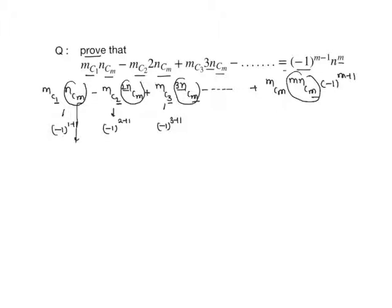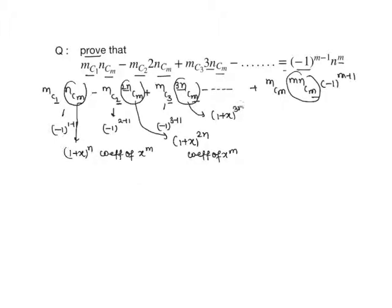Now observe that nCm is the coefficient of x power m in the expansion of 1 plus x whole power n. Similarly, 2nCm is the coefficient of x power m in 1 plus x whole power 2n, and 3nCm is the coefficient of x power m in 1 plus x whole power 3n.